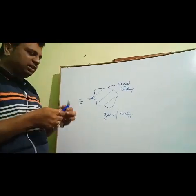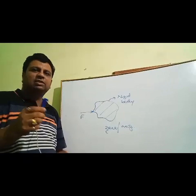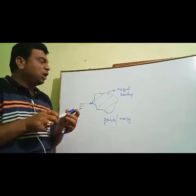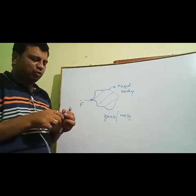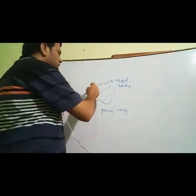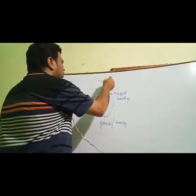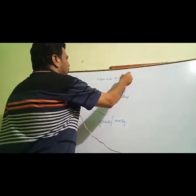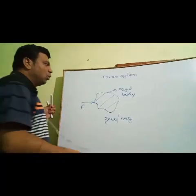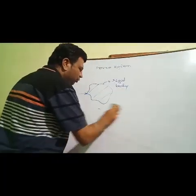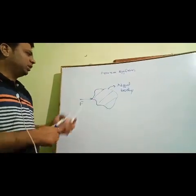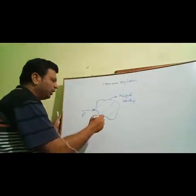This wall is a rigid body. This table is a rigid body. So the body which shows negligible deformation on the application of external force is what we call a rigid body. When a rigid body is subjected to one or more than one external force, it forms a force system.